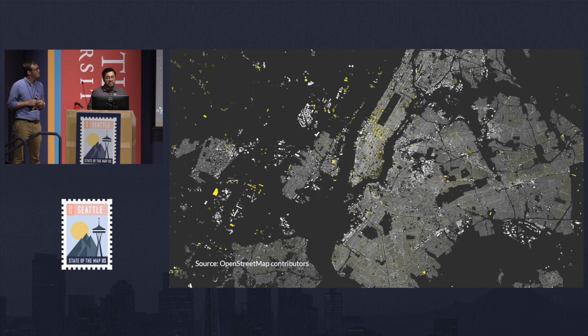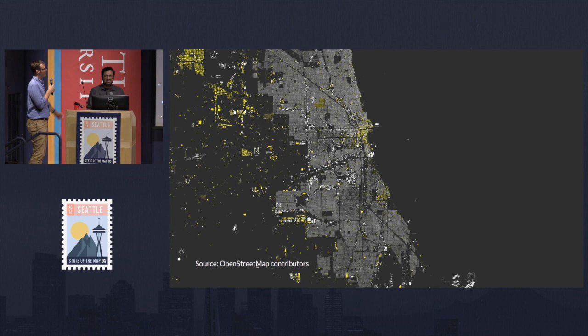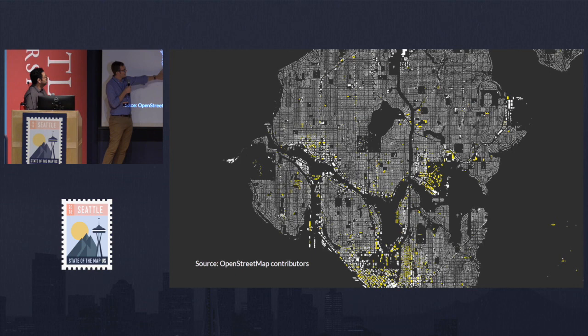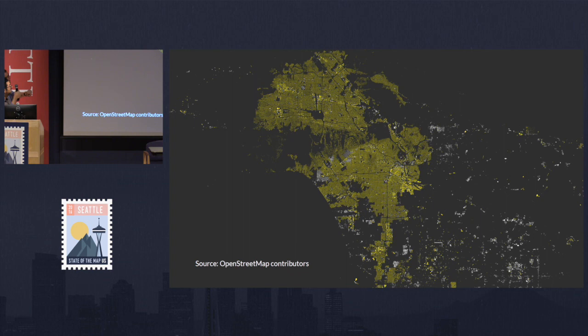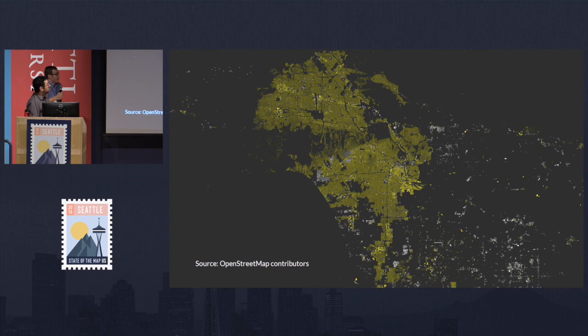So these maps we looked at — this is New York. The colors are actually color-coded: anything white is building equals yes, and anything yellow is building equals something other than yes. Seattle again. And this is Los Angeles today. There's a lot of really cool metadata that we're adding to the map that we're really excited about, and we hope you guys are too. Thanks so much.